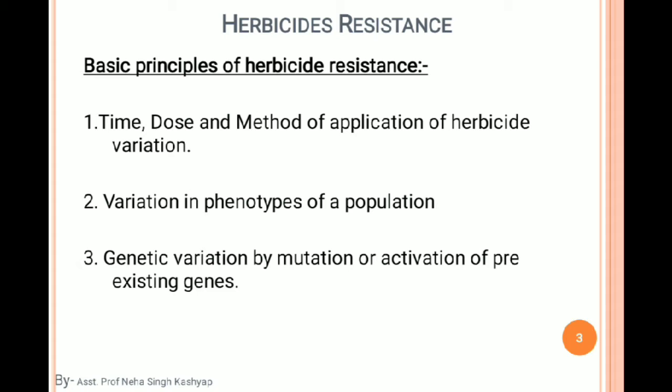There are three main basic concepts of herbicide resistance. The first concept involves time, dose, and method of application of herbicide. These are variable factors. The application must be done according to standard operations, and the dose is also a main factor.